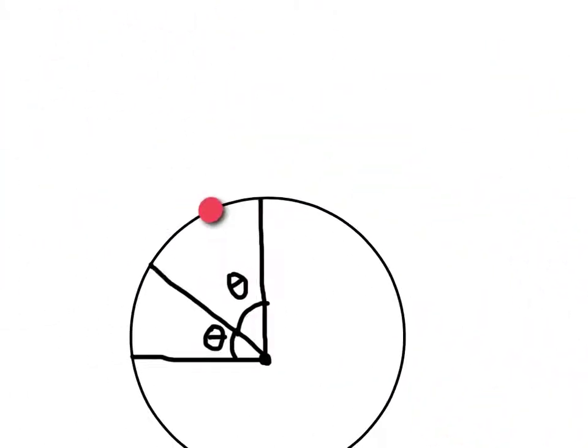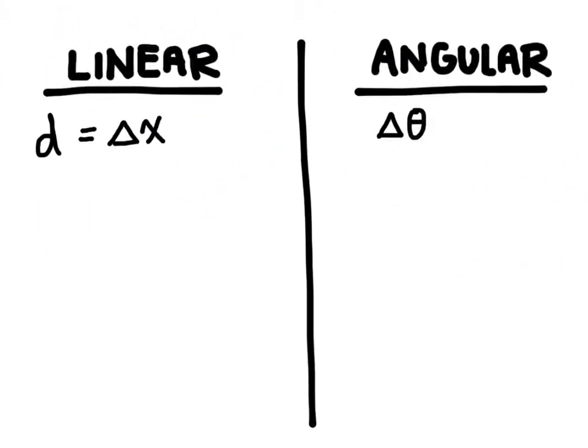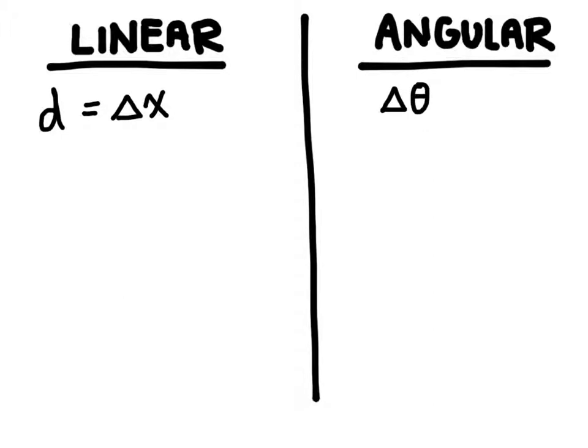Okay, so that's displacement. Let's go back and look at velocity. Now we use the symbol V when we're talking about linear velocity. And we use the equation delta x over time. So it's how long it takes you to change your position. That's what velocity is.